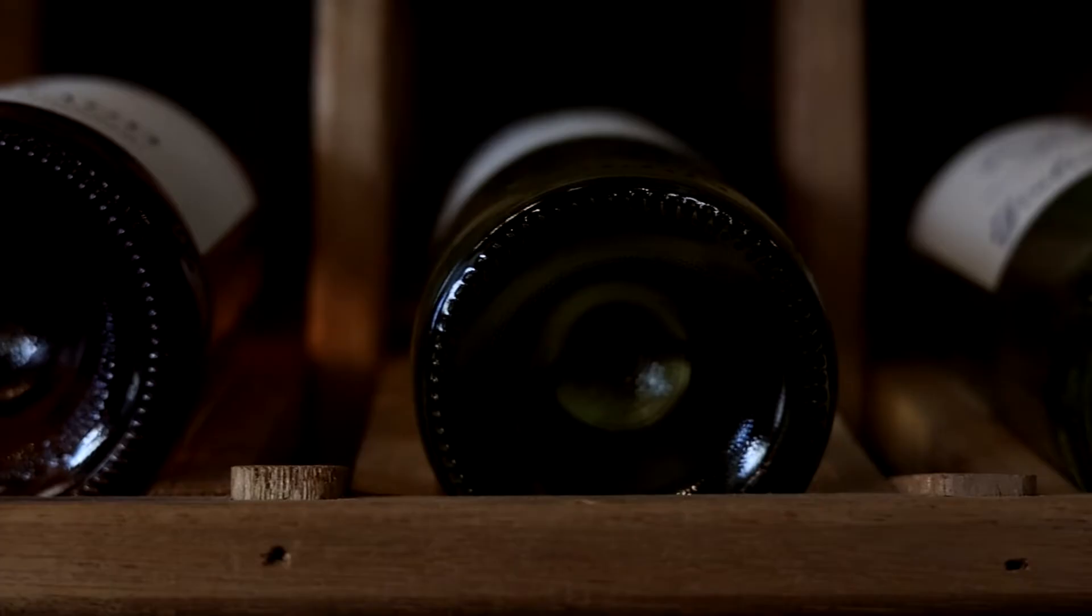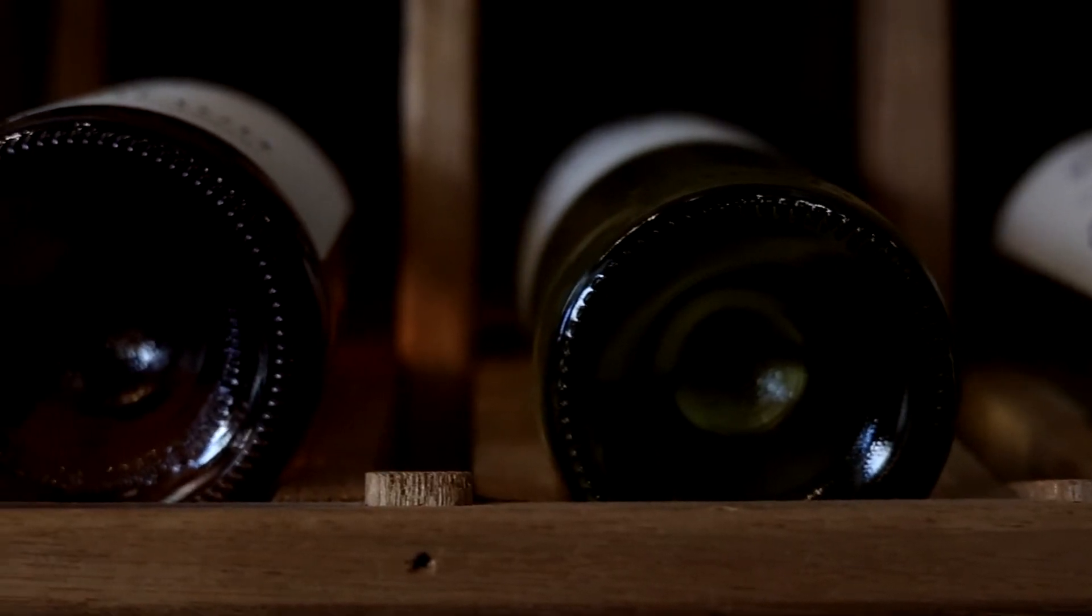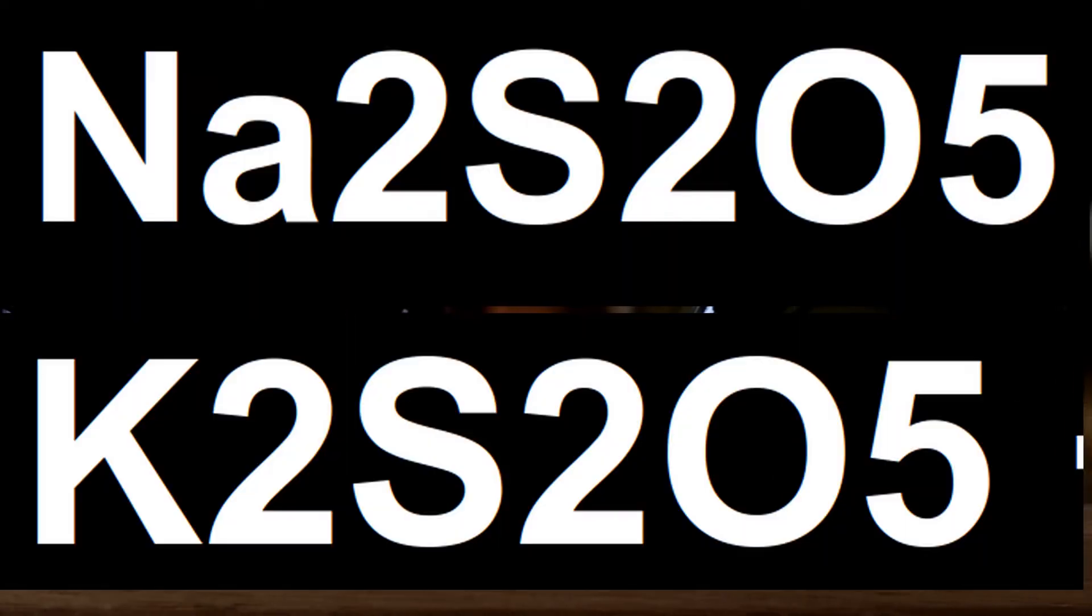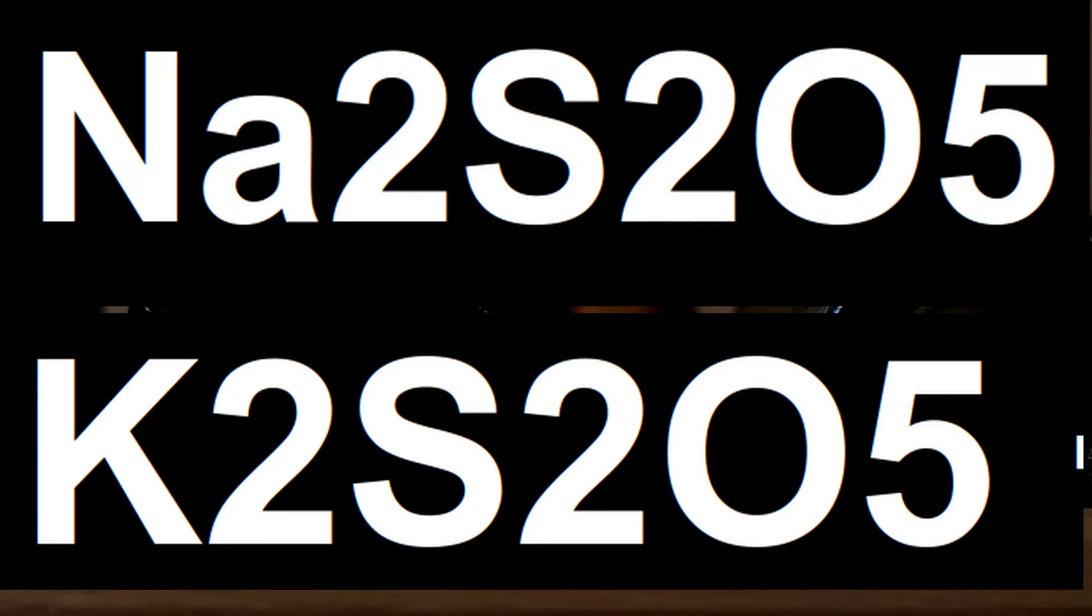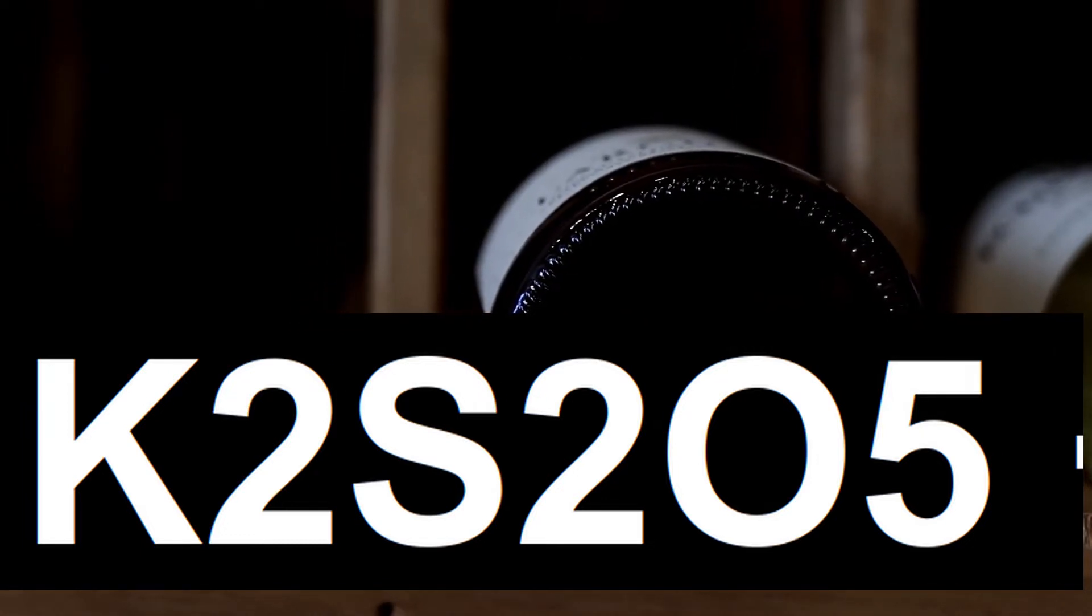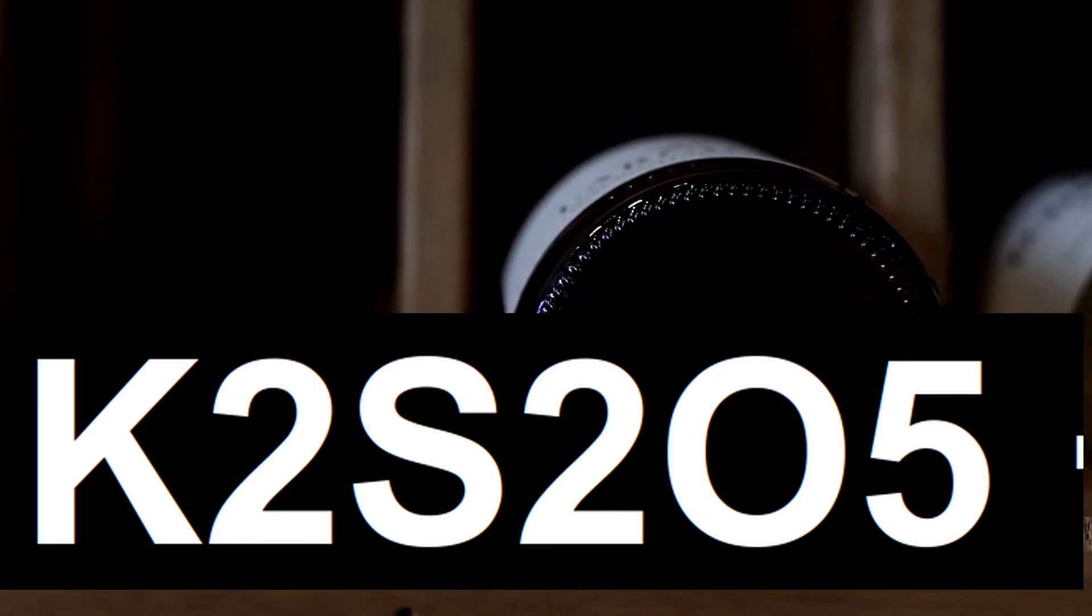While we do call these Campden tablets, that is a particular name for the product. For the most part you only need to worry about the active ingredient, and that is either going to be potassium or sodium metabisulphite. Chemically it is written out as K2S2O5, or at least as far as potassium pyrosulphite or metabisulphite is concerned.